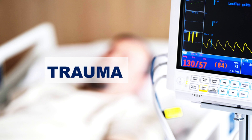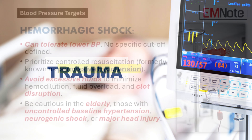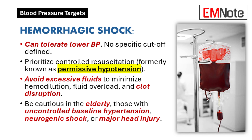Trauma management protocols will now be discussed. In hemorrhagic shock, lower blood pressure parameters may be tolerated without specific thresholds being defined. Controlled resuscitation protocols should be prioritized. Excessive fluid administration should be avoided to prevent hemodilution, volume overload, and clot disruption. Additional considerations must be given to elderly patients, those with uncontrolled hypertension, neurogenic shock, or significant head trauma.